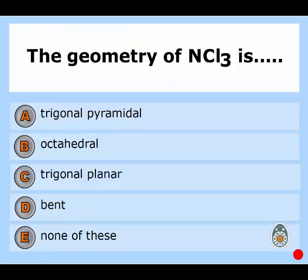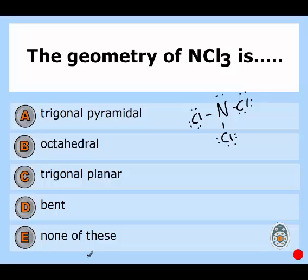For NCl₃: the structure has three atoms and one lone pair. So the molecular shape of NCl₃ is trigonal pyramidal. The electron geometry would be tetrahedral.